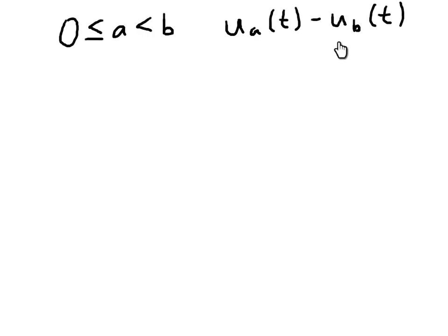And then this is a function that comes on at time b and has value 1 but we're subtracting it. So this whole thing will have value 1 starting at a. And then when we reach b we'll be subtracting 1 from the one we already have so the value will go back to 0.